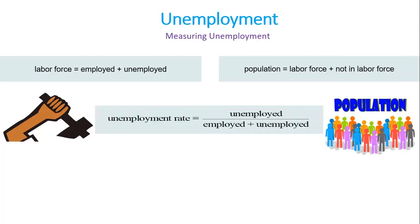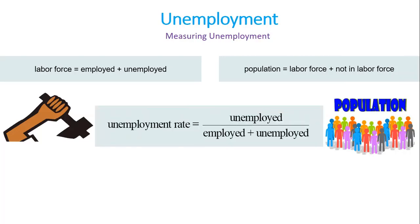Here we arrive at the unemployment rate. It is the ratio of the number of people unemployed to the total number of people in the labor force. As you can see, it is unemployed divided by employed plus unemployed, which is the labor force.